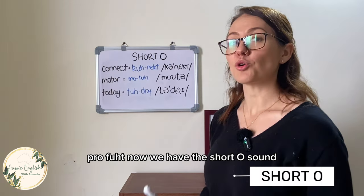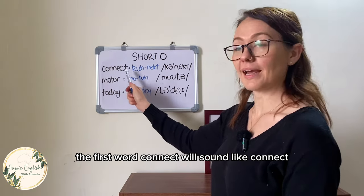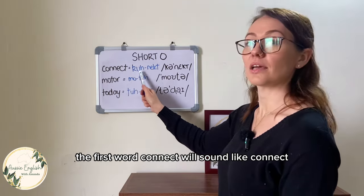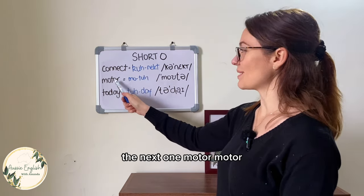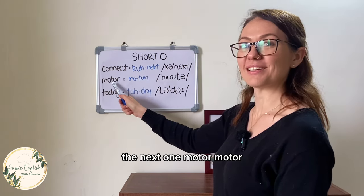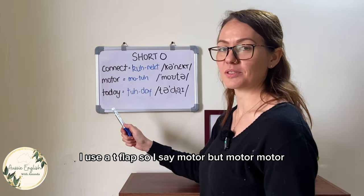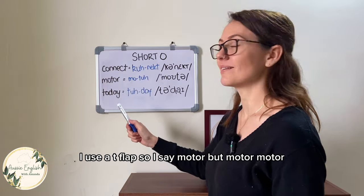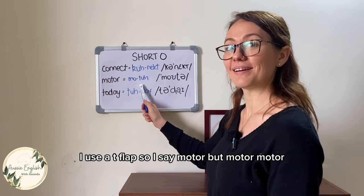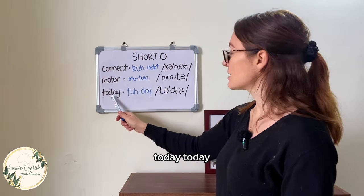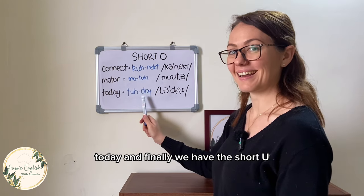Now we have the short O sound. The first word, 'connect', will sound like 'cuh-nect'. The next one is 'motor' — I use a T-flap so I say 'mo-tuh'. And the last one is 'today' — tuh-day.